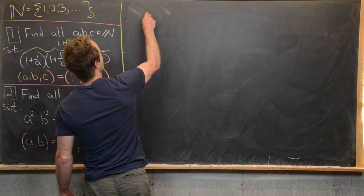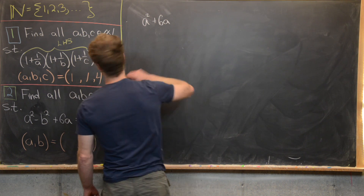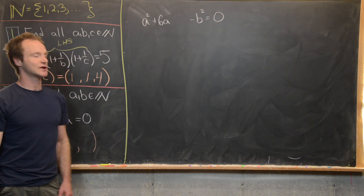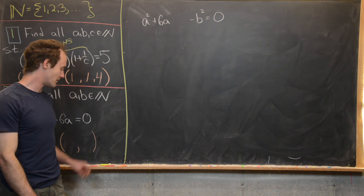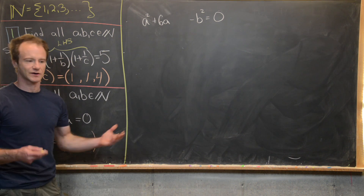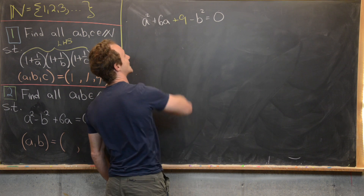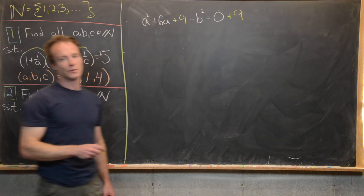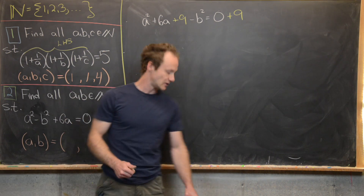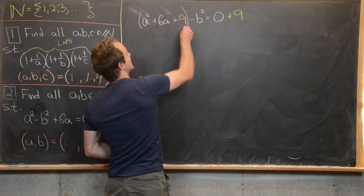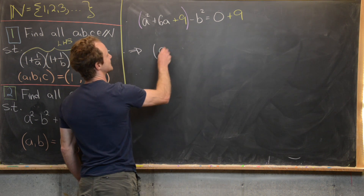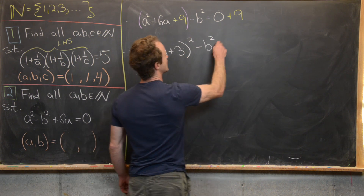I'm going to rewrite this as a² + 6a − b² = 0, leaving a little gap so I can complete the square in the a² + 6a part. We complete the square by taking half of six, which is three, squaring it to get nine. We add nine to both sides, giving an equivalent equation, and then we can factor the purple part as (a + 3)² − b² = 9.